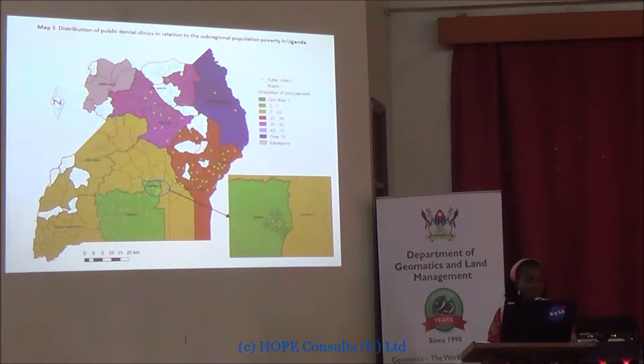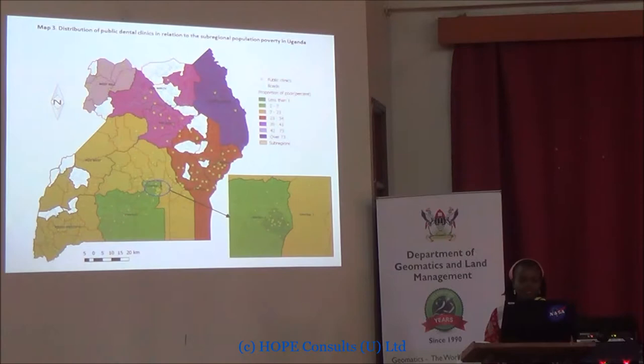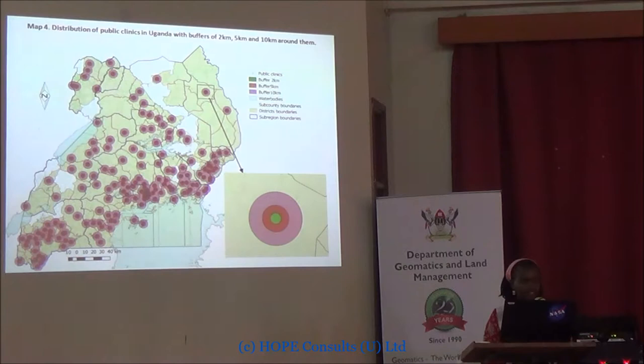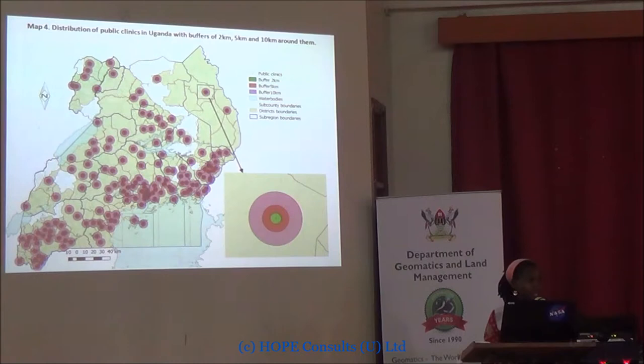This map shows the different buffer distances at which we performed buffer analysis. In the southern part of the country, there is quite a lot of clustering — the buffers, especially at the 10km distance, are touching each other, which is a sign of great availability. In the northern part, the buffers are scattered with hardly any intersection, which is a sign of disadvantage.